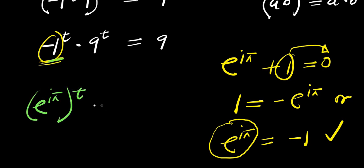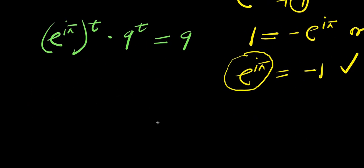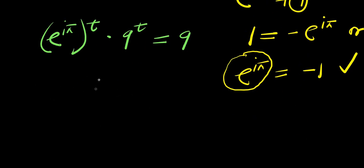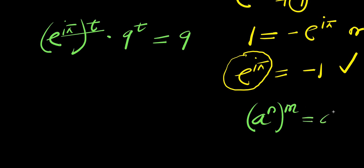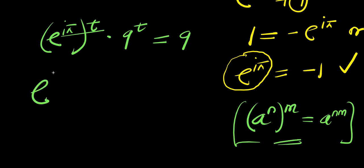So we substitute e to the power of i times pi in place of negative 1, giving e to the power of i times pi, raised to the power of t, times 9 to the power of t, and this equals 9. Now we can apply the identity: a to the power of n, raised to the power of m, equals a to the power of n times m.